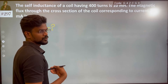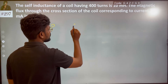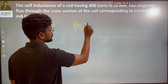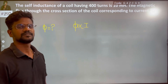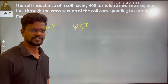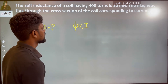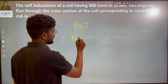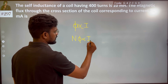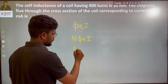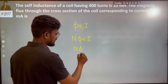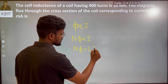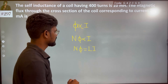What do we know? Your flux is directly proportional to I. And if it has N number of turns, flux is directly proportional to I. So we add one constant — that is your self-inductance.